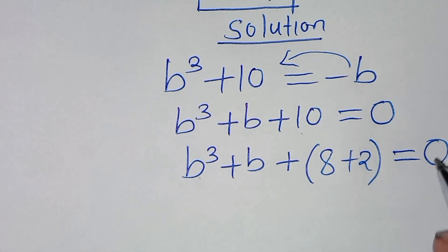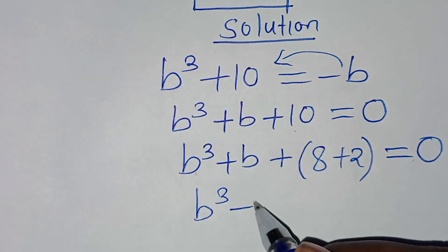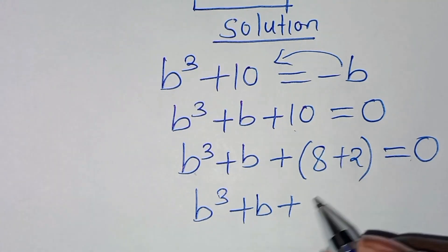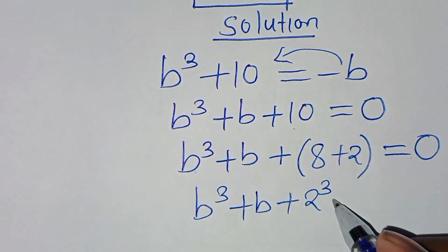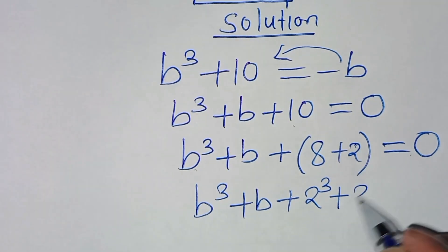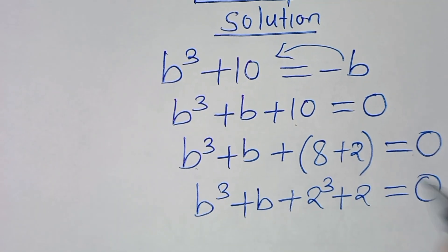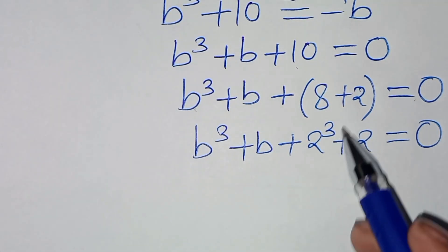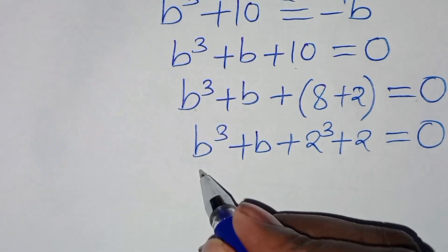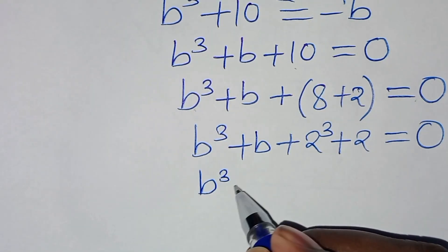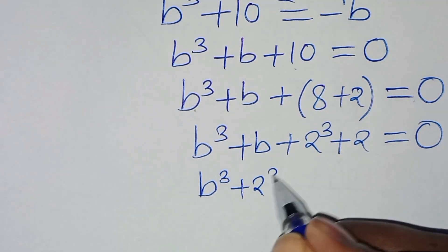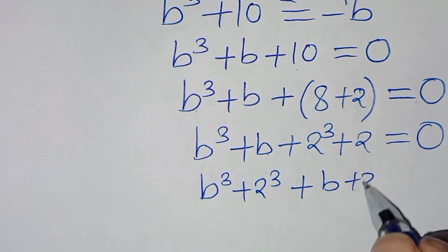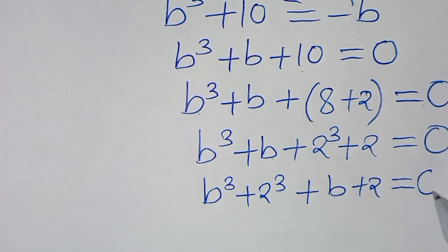The next step from here, we have b to the power of 3 plus b, then plus — now we can express 8 as 2 to the power of 3 — then plus 2, this is equal to 0. Now, we have b to the power of 3 and we have 2 to the power of 3 here, so we can express this as b to the power of 3 plus 2 to the power of 3, then plus b plus 2, this is equal to 0.